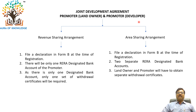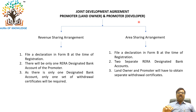Mainly the JDA agreements are of two types: it may be on revenue sharing arrangement, or it may be on area sharing arrangement. In either of the cases, the JDA agreement and declaration in Form B from both the parties have to be uploaded at the time of registration.